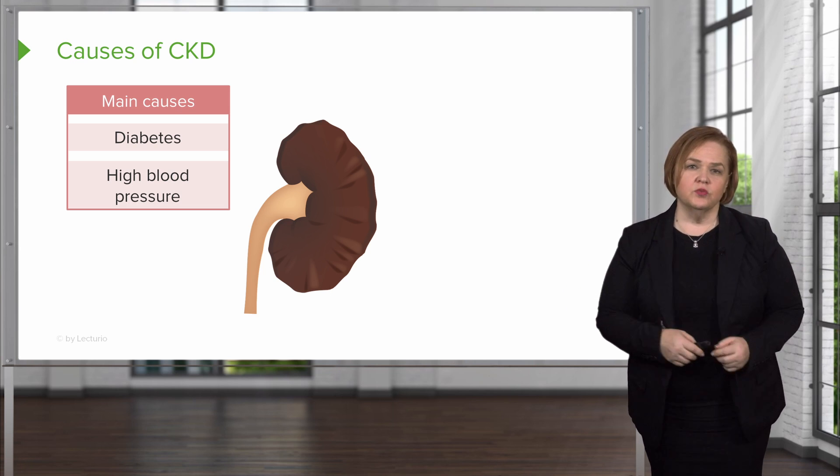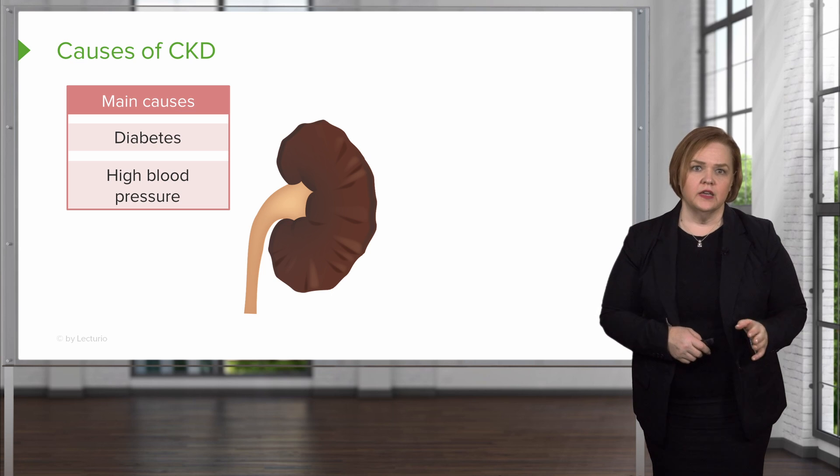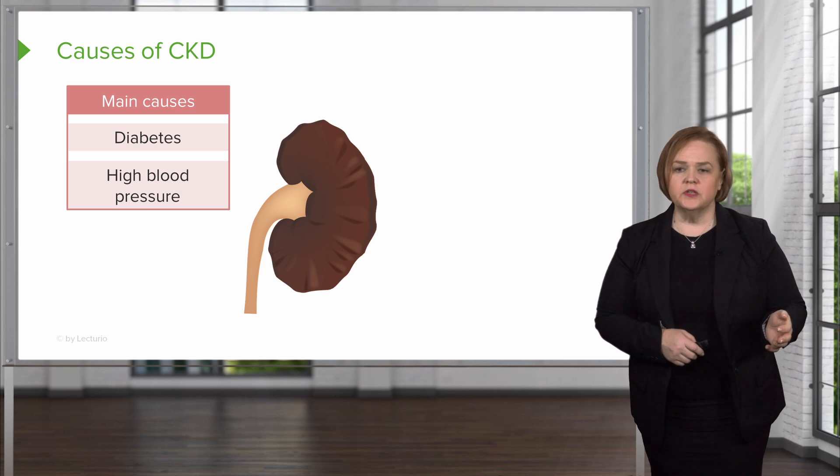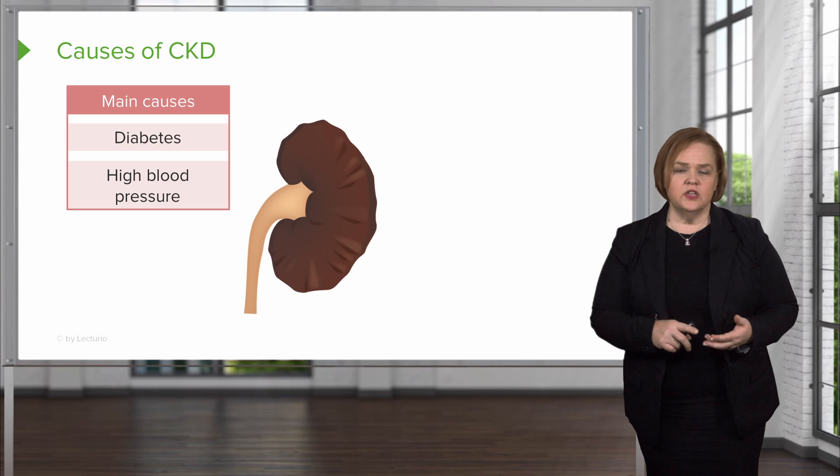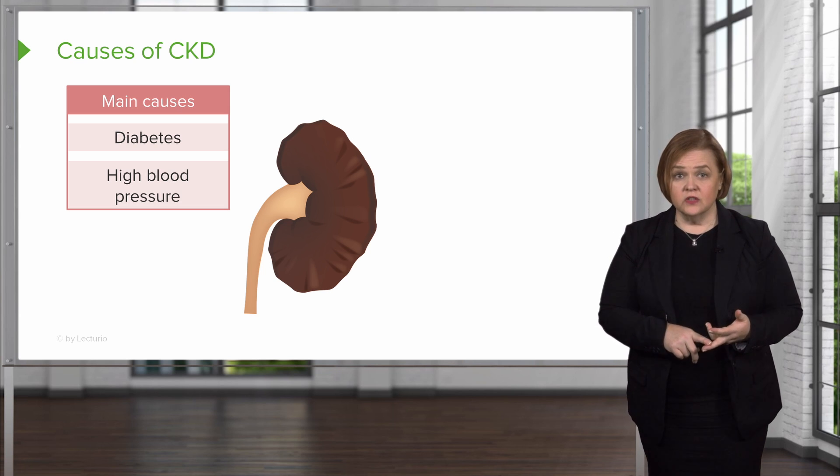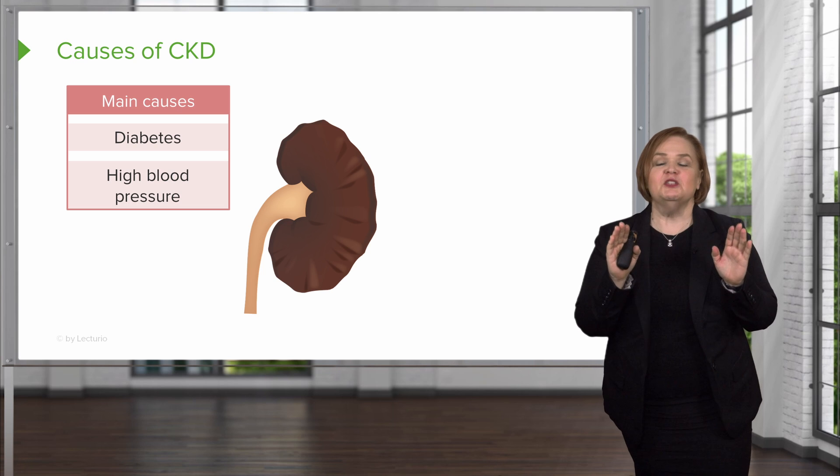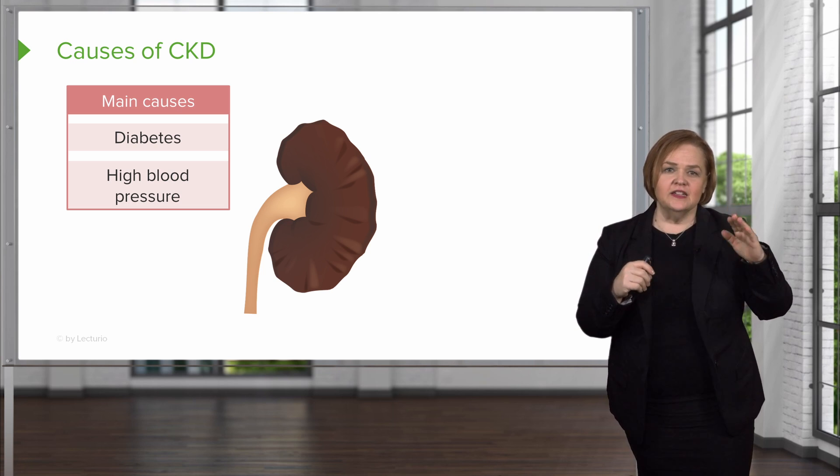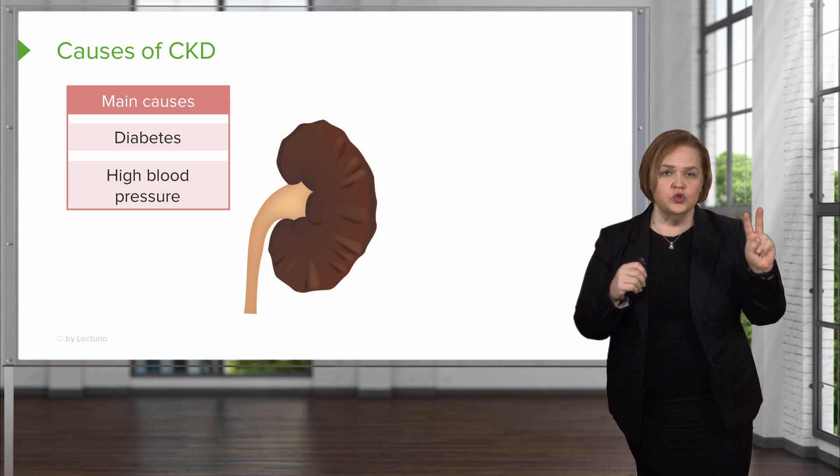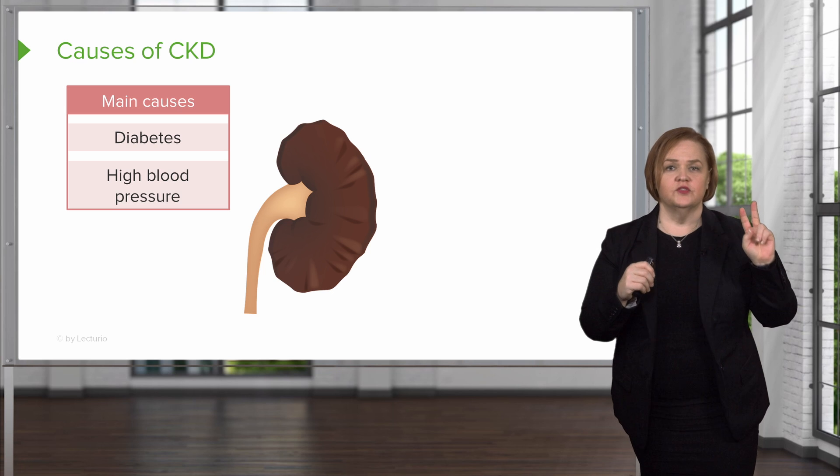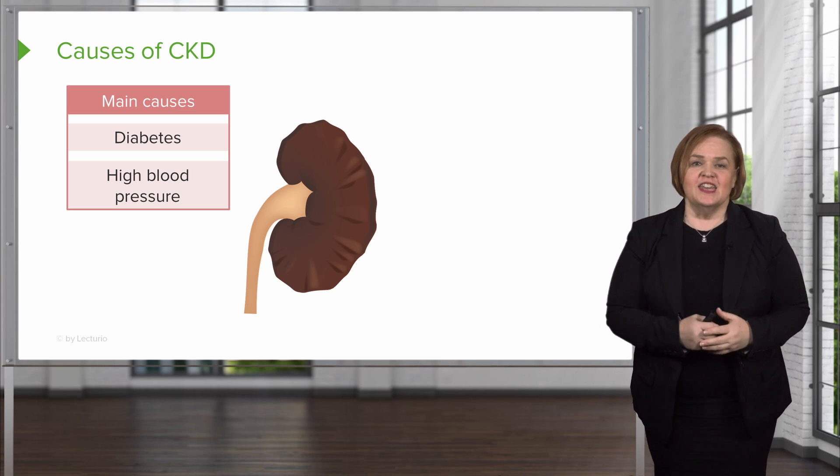High blood pressure - we can help them with lifestyle changes and medications so that you can help control that blood pressure and minimize our risk of chronic kidney disease. Before we go on and do the other six, make sure that you've got laid down in your mind that diabetes and high blood pressure are the top two most common causes of chronic kidney disease.